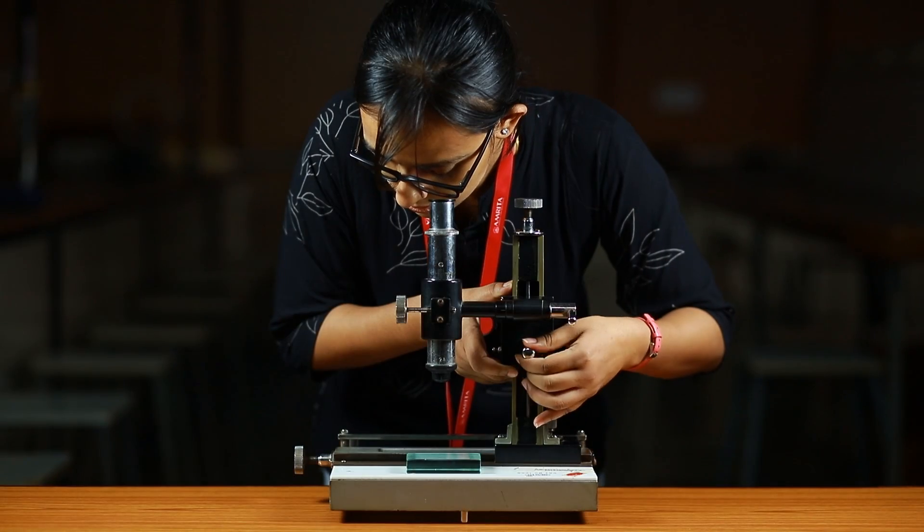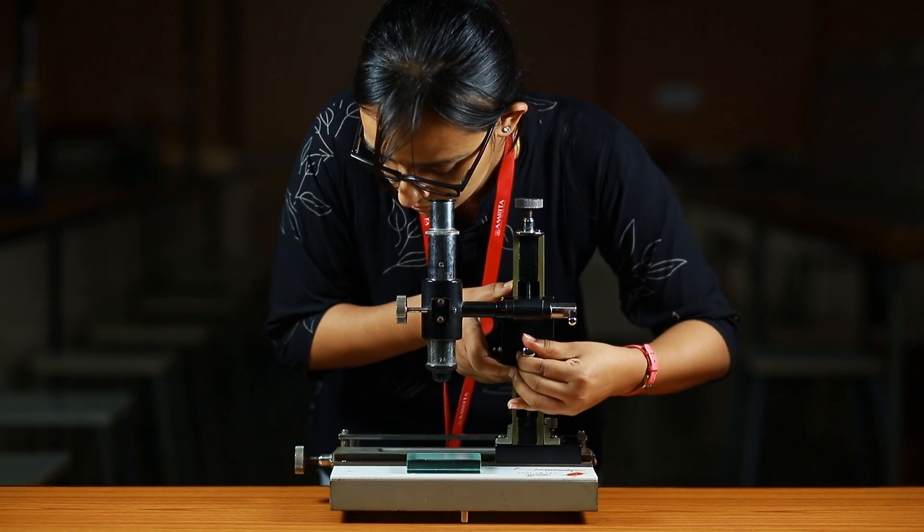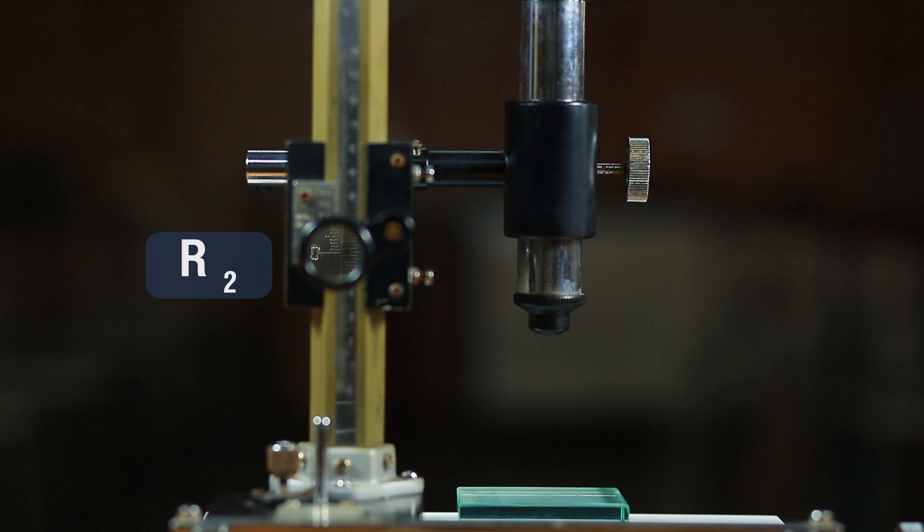Tighten the screw. Make the fine adjustment. Take the reading R2 with the main scale and coinciding division of the vernier scale.